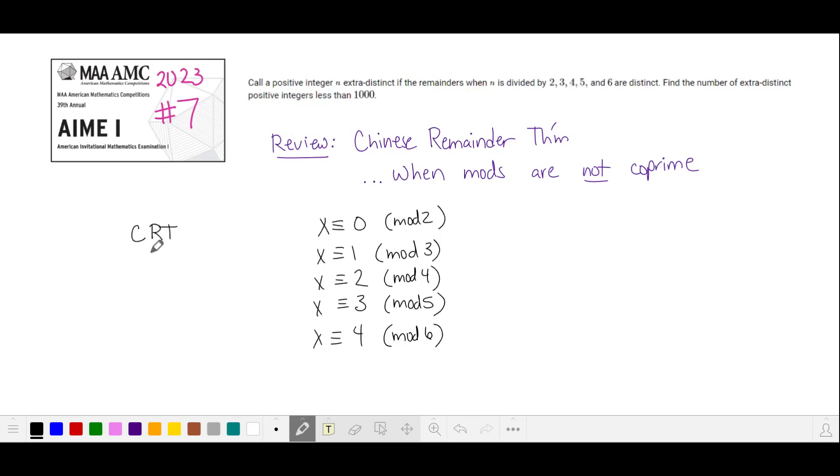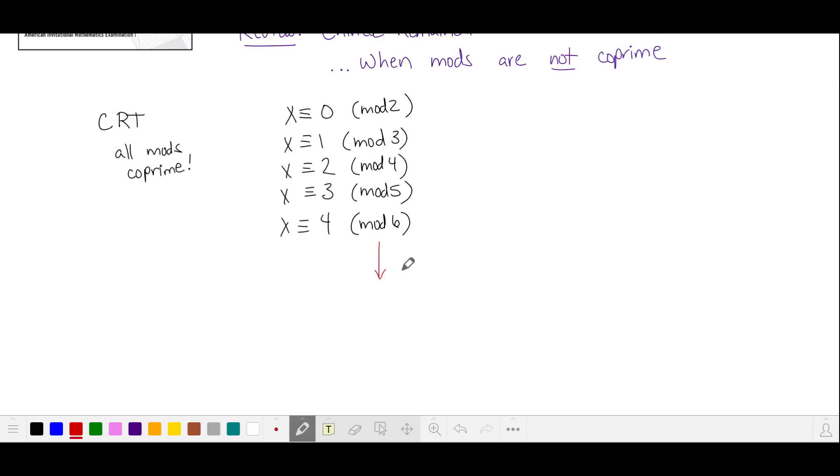Chinese remainder theorem is only supposed to work if your system of equivalences consists of mods that are co-prime with each other. So what do we do if we have a system where some of the mods are not co-prime? We can take one of our mods that isn't prime and break it up into the product of its primes so that the GCD of these two factors is one.